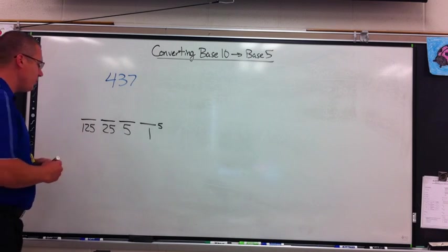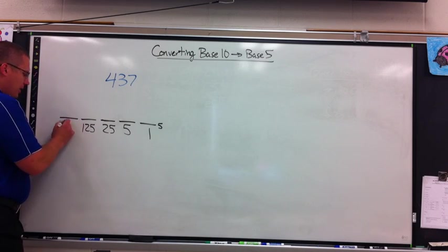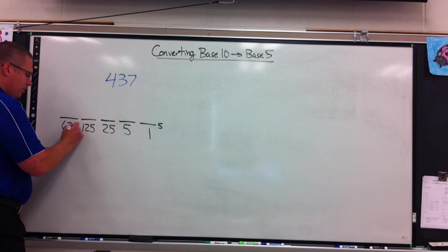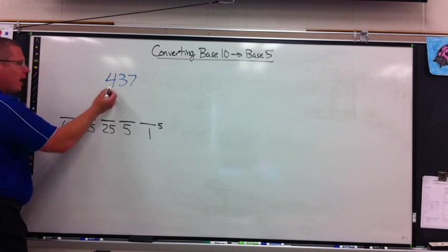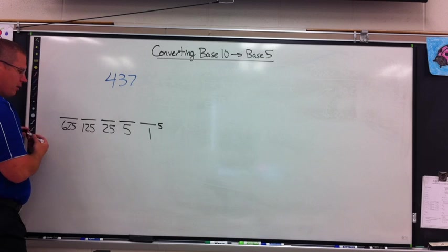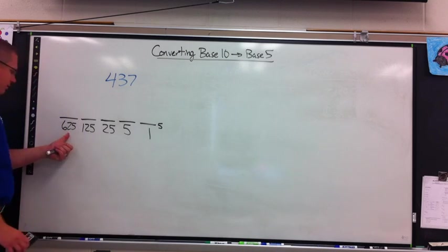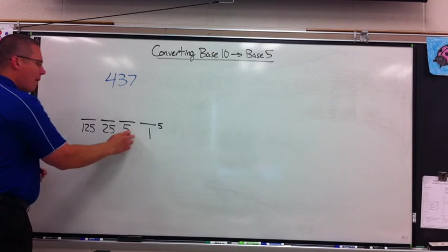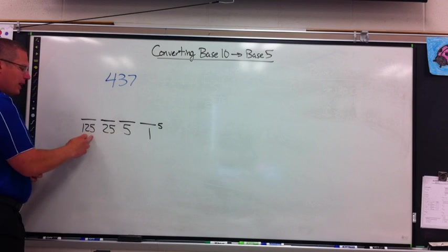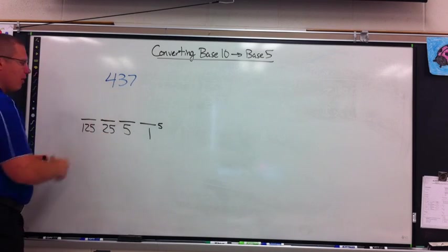The reason I stopped at 125 is that the next place value is 625. Will it take any 625s to make 437? The answer is no — 625 is too big. So I list all my base 5 place values as many as I can without going over the number.